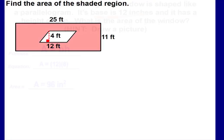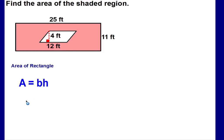We have one more example — find the area of the shaded region. The big shape is a shaded rectangle, but inside there's an unshaded parallelogram. We don't want the full rectangle area; we want the rectangle minus the parallelogram area. We can find the area of the full rectangle and then subtract the area of the parallelogram. Formula: area equals base times height. The base is 12 and the height is 11, so the area of the rectangle is 275 feet squared.